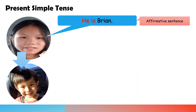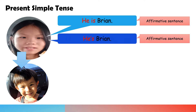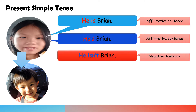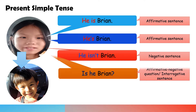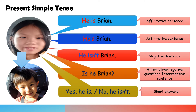He is Brian — affirmative sentence. He isn't Brian — negative sentence. Is he Brian? Yes, he is, or no, he isn't — these are question and answer forms.